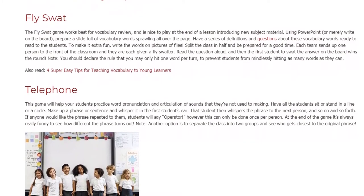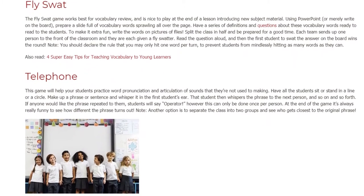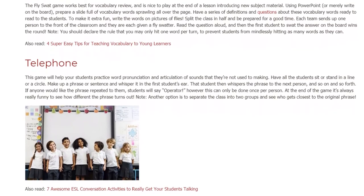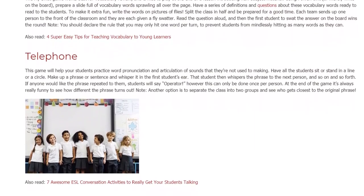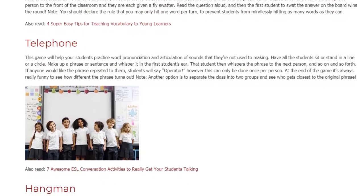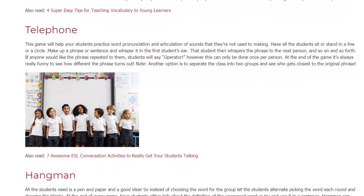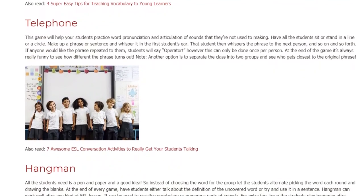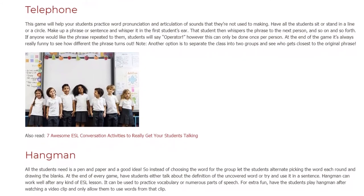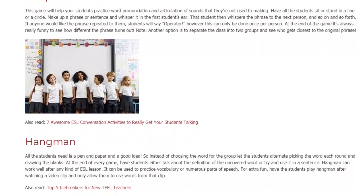This game will help your students practice word pronunciation and articulation of sounds they're not used to making. Have all the students sit or stand in a line or a circle. Make up a phrase or sentence and whisper it in the first student's ear. That student then whispers the phrase to the next person, and so on and so forth. If anyone would like the phrase repeated to them, students will say 'operator' — however this can only be done once per person. At the end of the game, it's always really funny to see how different the phrase turns out. Another option is to separate the class into two groups and see who gets closest to the original phrase.